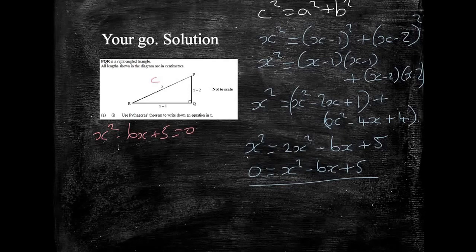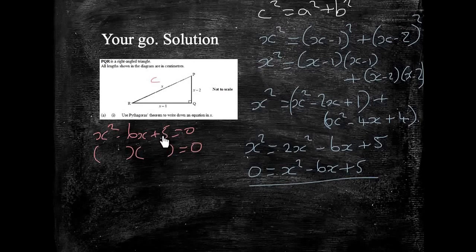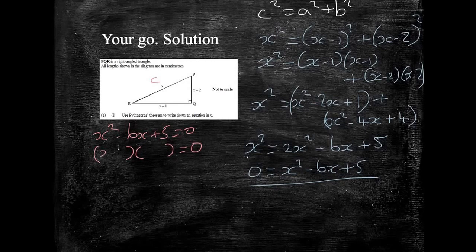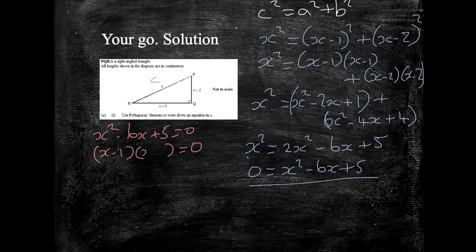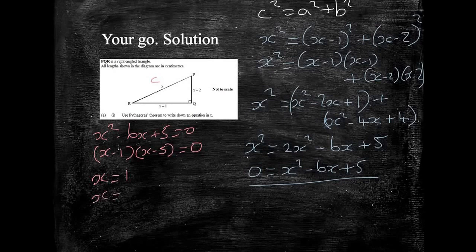Solving it means that we have to then factorise our new expression. X squared minus 6X plus 5 equals 0. We're looking for numbers that multiply together to give us 5 and add together to give us minus 6. That's got to be minus 5 and minus 1. So X minus 1, X minus 5. The two different values that we could get for X are X equals 1 and X equals 5.